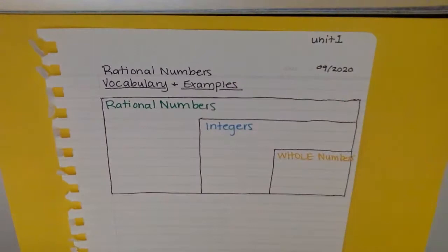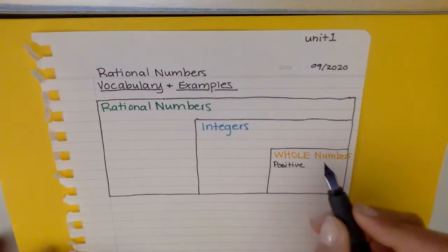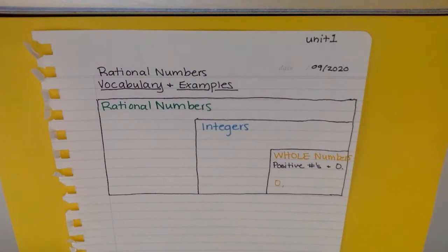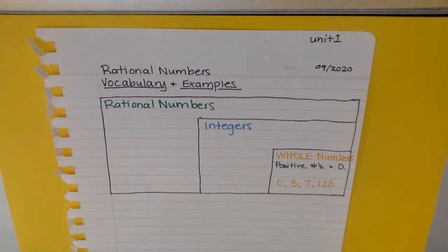We're actually going to start with whole numbers once we're already used to. So whole numbers are positive numbers and zero. Notice how I'm using shorthand for this. I do not need to be super fancy. I just want to make sure my point gets across. I'm going to put some examples of whole numbers in my color that I chose. Zero, five, seven, one twenty, all whole numbers. Go ahead and put a couple of examples in your notes.